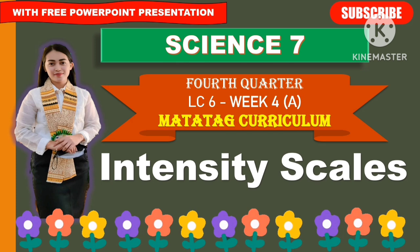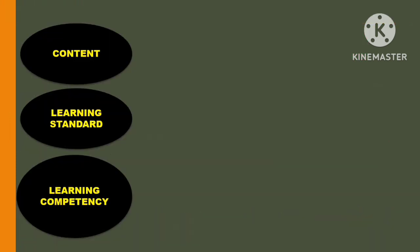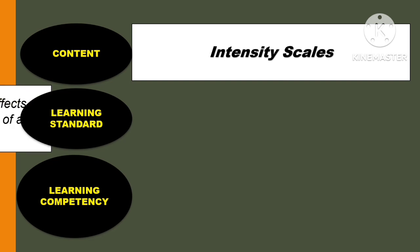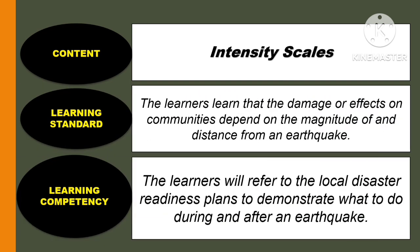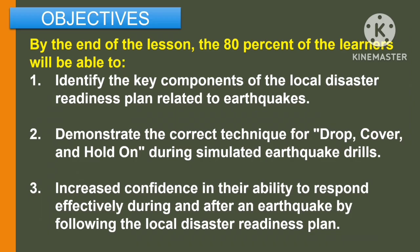This will be the fourth quarter topic on Learning Competency No. 6. By the end of the lesson, 80% of the learners will be able to: first, identify the key components of the Local Disaster Readiness Plan related to earthquakes; second, demonstrate the correct techniques for drop, cover, and hold on during simulated earthquake drills; and third, increase confidence in their ability to respond effectively during and after an earthquake by following the Local Disaster Readiness Plan.